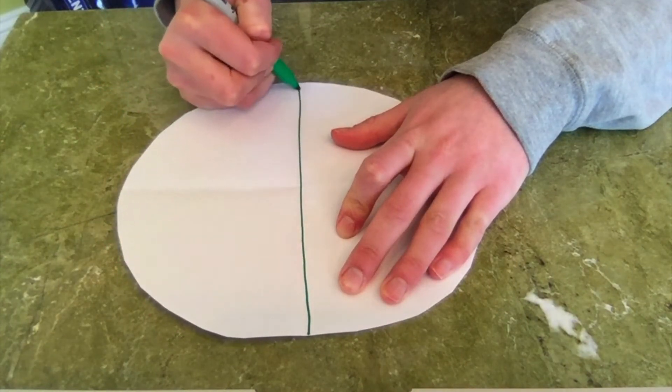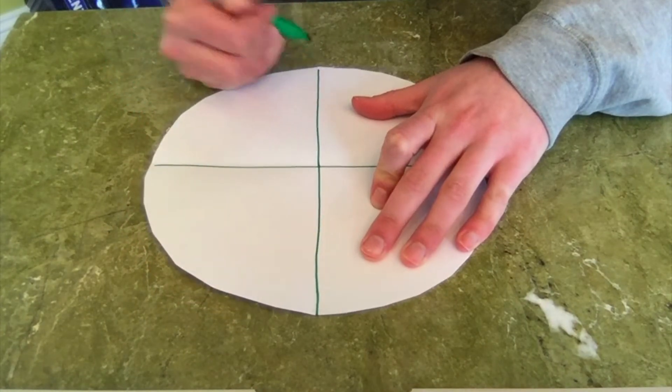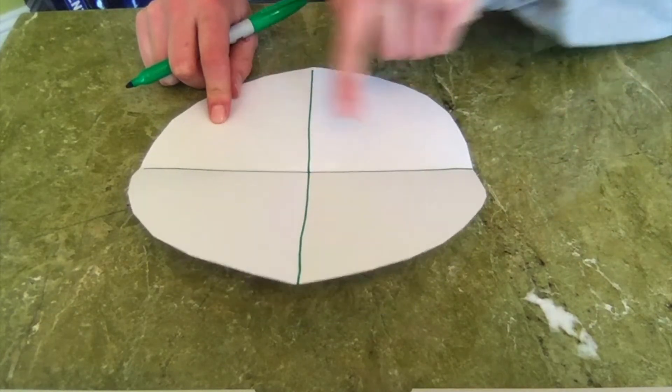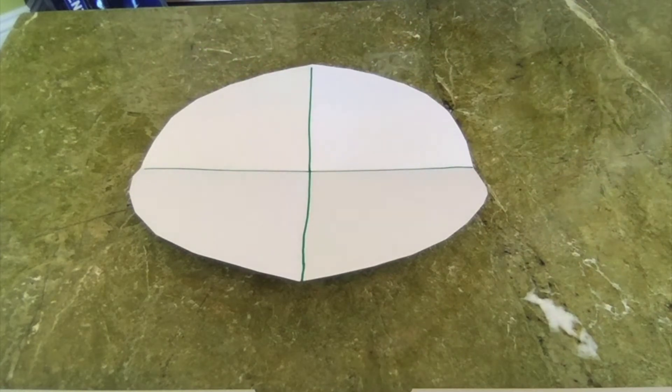So we draw one line and we draw two lines. So as you can see when you draw two lines you get one, two, three, four, four equal parts. And that's exactly how much we need for our butterfly life cycle.